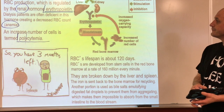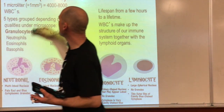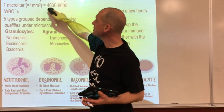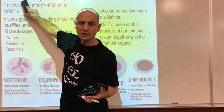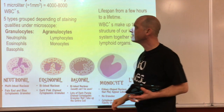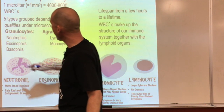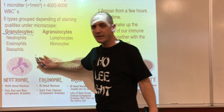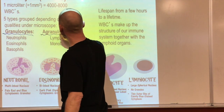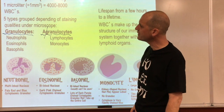White blood cells: per microliter we have somewhere between four and eight thousand - much less than red blood cells. The technical term for white blood cells is leukocytes. We have two main groups differentiated by how they stain under the microscope: granulocytes, which show little granules when stained, and agranulocytes, which do not.